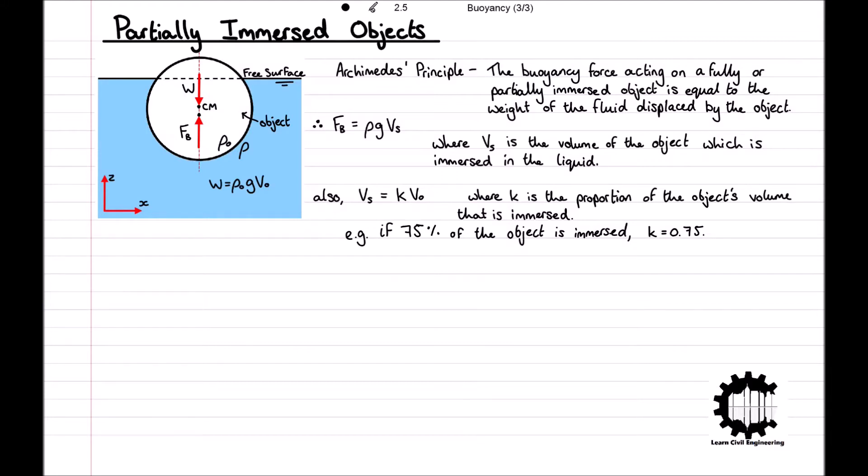Therefore, we can write that the buoyancy force Fb = ρgVs, which also equals ρgkV₀, and Fb acts through the centre of mass of the liquid volume displaced by the object.